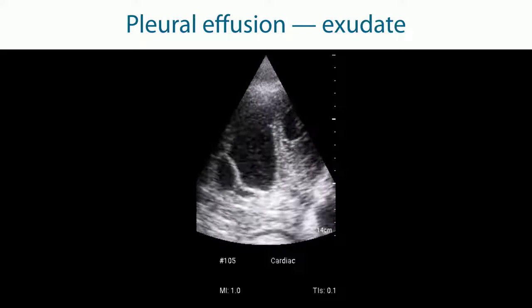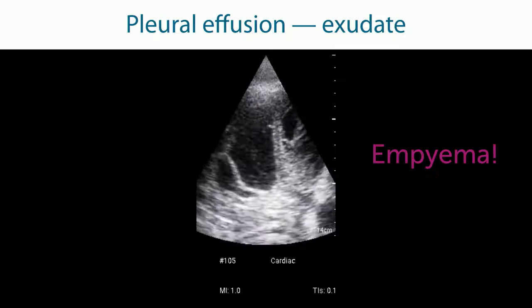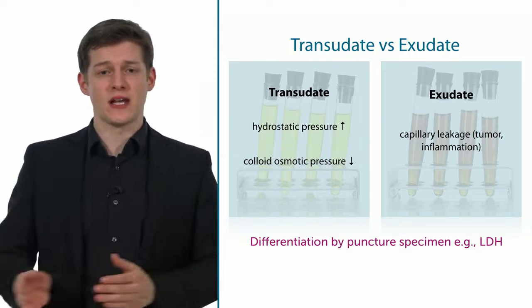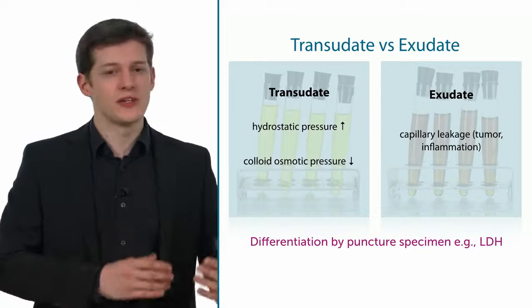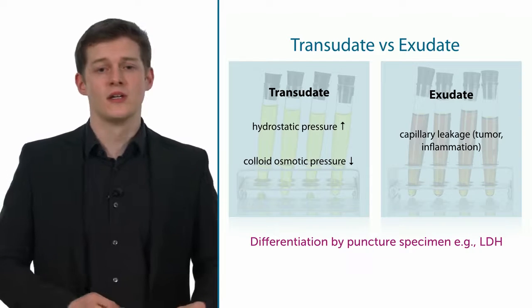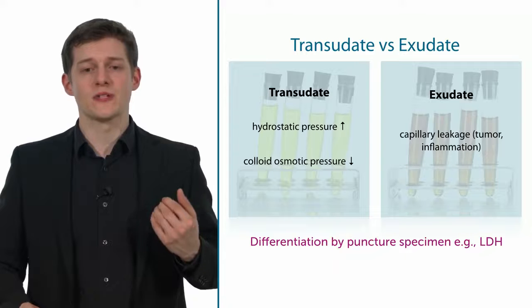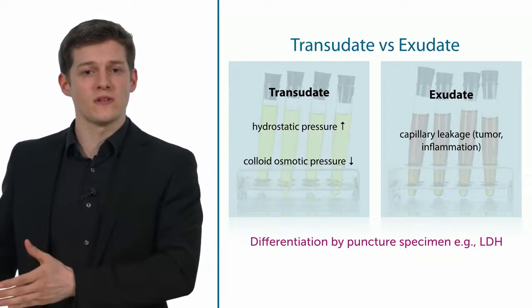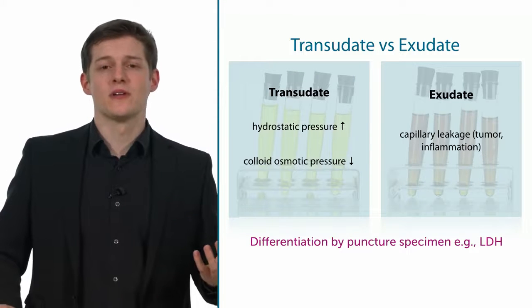What is the physiology behind a transudate and an exudate? In a transudate we have this clear effusion. It is due to increased hydrostatic pressure for example in congestive heart failure or a reduced colloid osmotic pressure for example in liver disease because there's a lack in protein synthesis. Or we have protein loss if you have kidney disease. In an exudate we have this capillary leakage. So there are a lot of proteins, a lot of cells inside the fluid and they create these fibrinous structures.